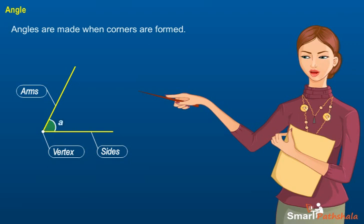To show an angle, we use a small curve at the vertex. To name an angle, two points, one on each side and the vertex are used. Thus, angle POQ is a better way of naming the angle instead of angle O.